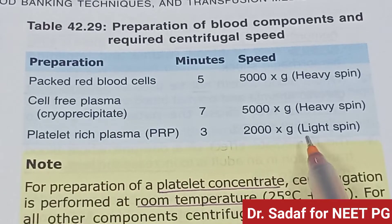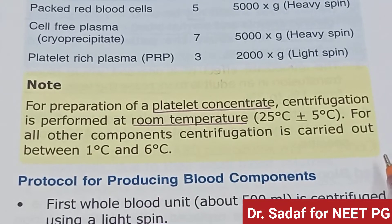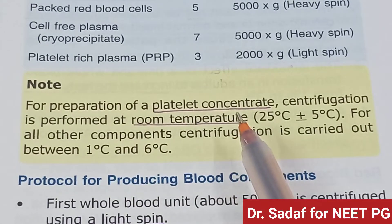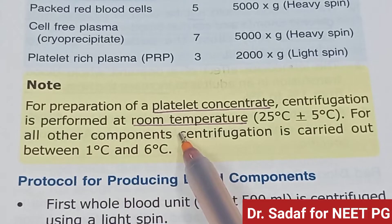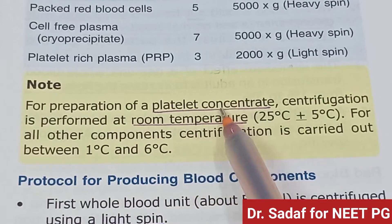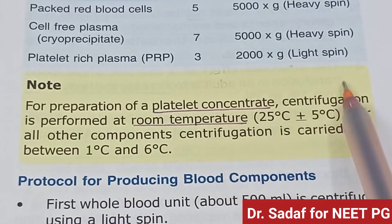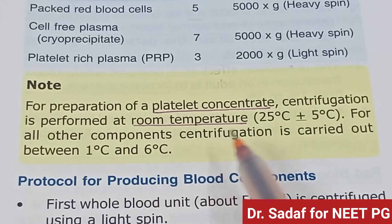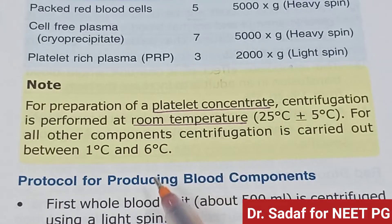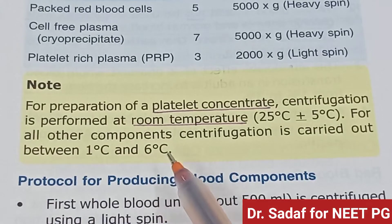For preparation of platelet concentrate, centrifugation is performed at room temperature. For all other components, centrifugation is carried out between 1 to 6 degrees Celsius.